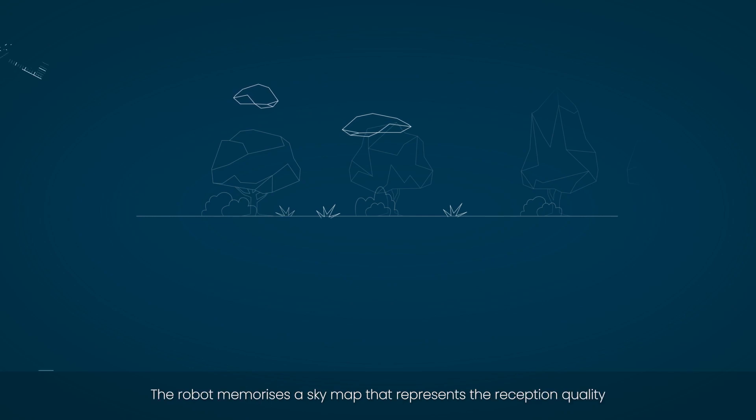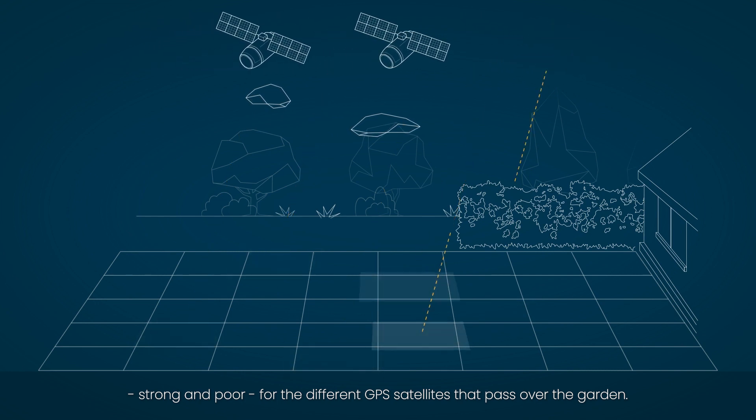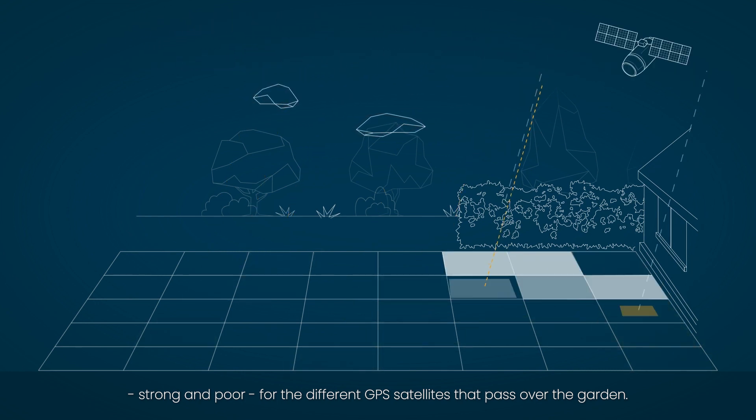The robot memorises a sky map that represents the reception quality, strong and poor, for the different GPS satellites that pass over the garden.